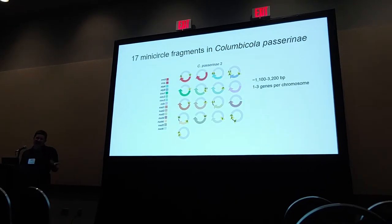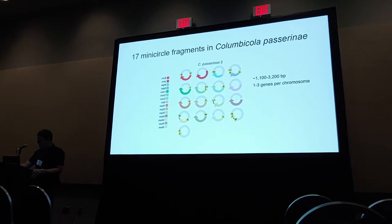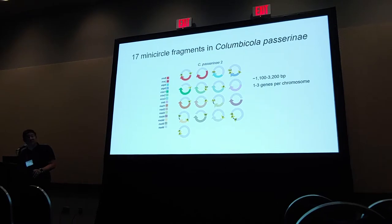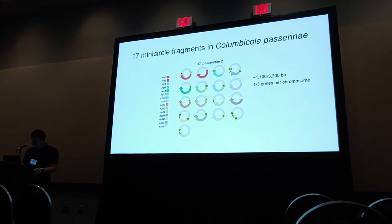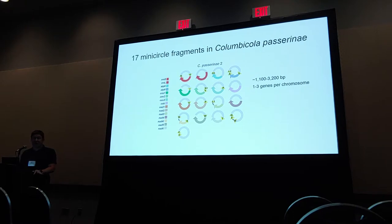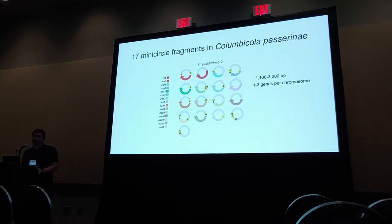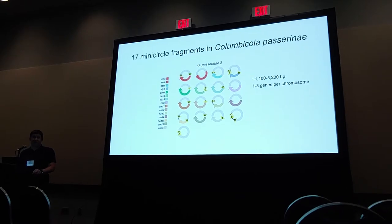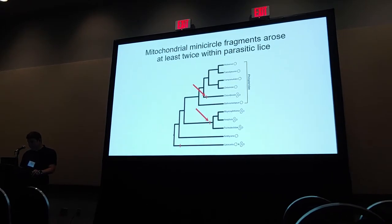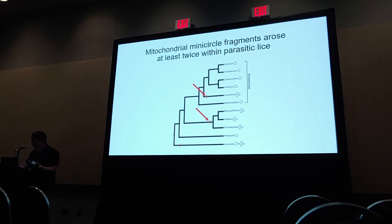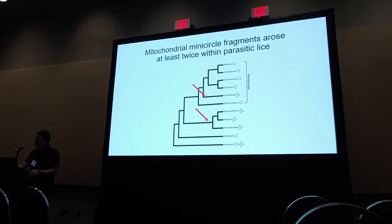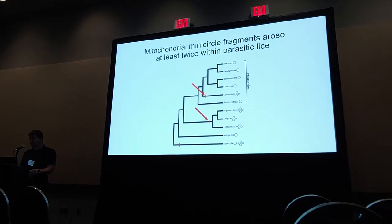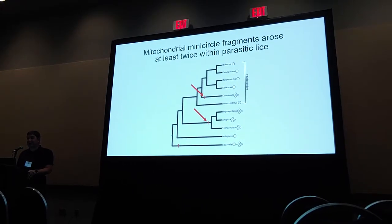Here's what we found when assembling the feather louse genus Columbicola: it is fragmented. We recovered 17 mini-circle fragments in the species, between 1,100 and 3,200 base pairs long, containing one to three genes per chromosome — a level of fragmentation very similar to the human louse. Right off the bat, this suggests that mini-circle fragmentation happened at least twice within parasitic lice, so we're not just looking at a single origin.